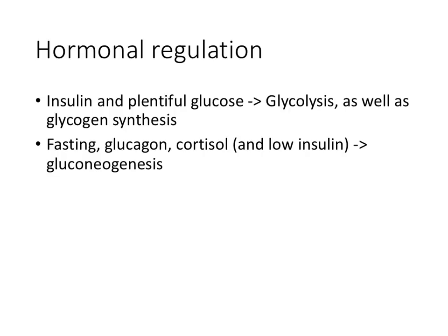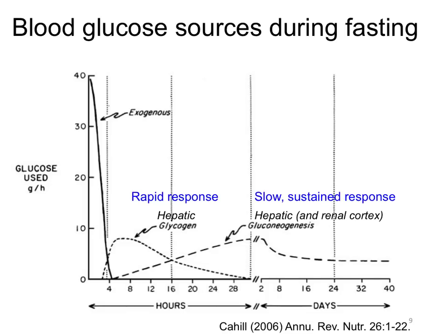To summarize the hormonal regulation: when insulin and glucose are plentiful, glycolysis is stimulated as well as glycogen synthesis. When we move to the fasting state, glucagon is secreted as well as cortisol — particularly, cortisol is high in our blood in the morning. In the presence of low insulin, gluconeogenesis is stimulated. We previously discussed how the activation of hepatic glycogen breakdown is a fast process through glycogen phosphorylase downstream of glucagon signaling. By contrast, the activation of gluconeogenesis is a slower, more sustained process, occurring primarily through transcriptional regulation — the production of more molecules of the enzymes specific for gluconeogenesis.